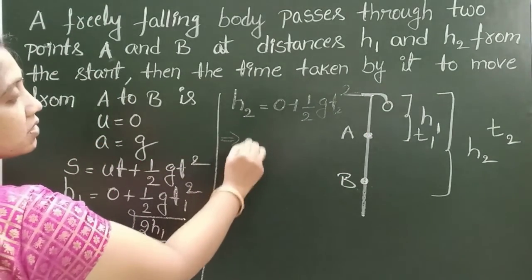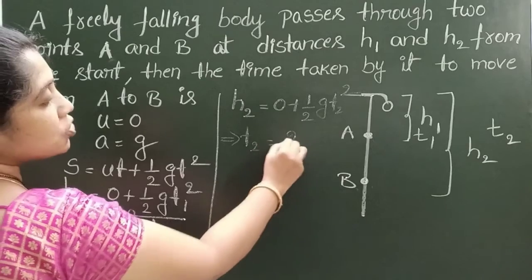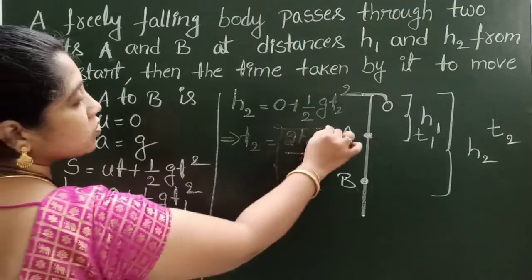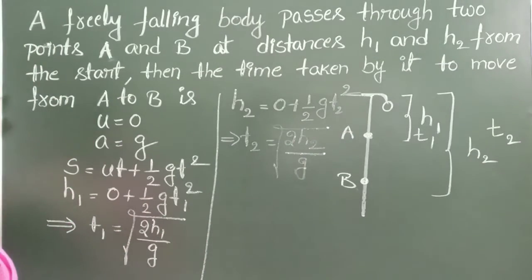So g T2 squared. And from this T2 equals square root of 2H2 by g. So T1 equals square root of 2H1 by g and T2 equals square root of 2H2 by g.